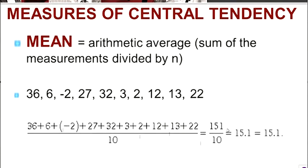So 36 plus 6 plus negative 2, et cetera, is 151. Divide that by the 10, and we get a mean of 15.1.